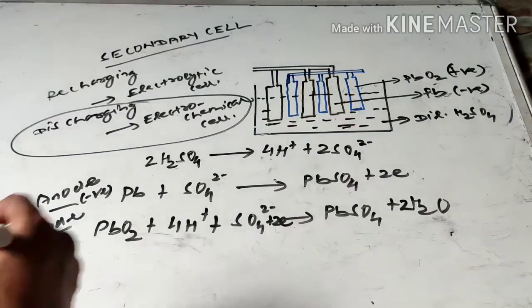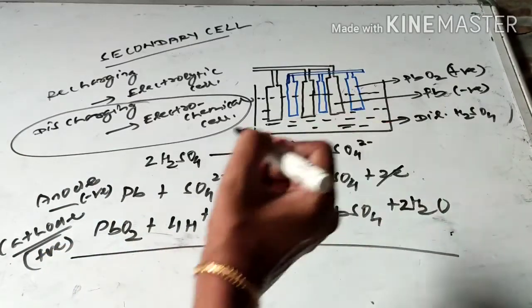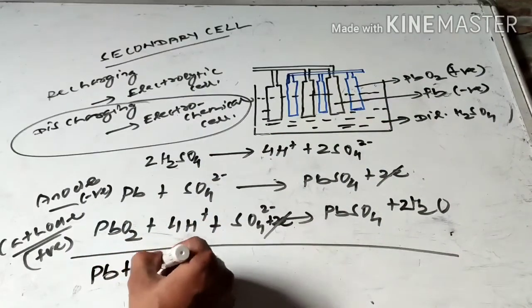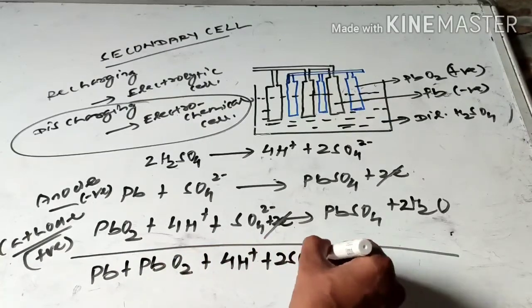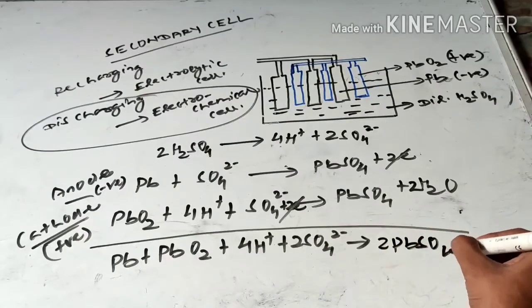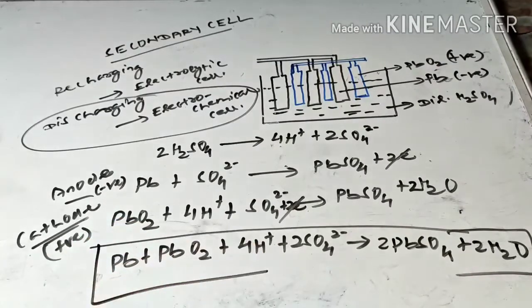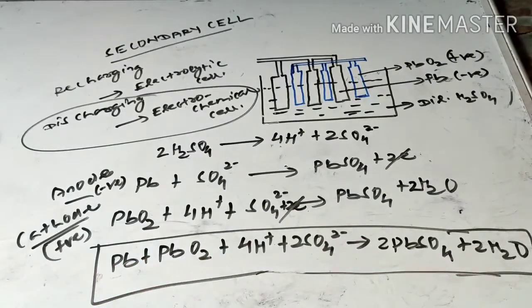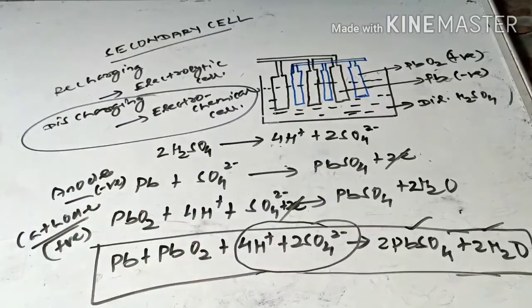The net cell reaction for discharging: Pb + PbO₂ + 4H⁺ + 2SO₄²⁻ → 2PbSO₄ + 2H₂O. During discharging, lead and lead dioxide react with sulfuric acid and give lead sulfate plus water. This indicates that sulfuric acid is consumed, so the density of sulfuric acid decreases.